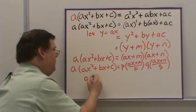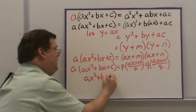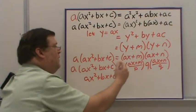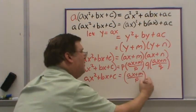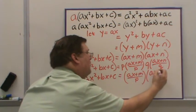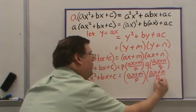This side would be left with AX squared plus BX plus C. This side would be left with AX plus M over P times AX plus N over Q.